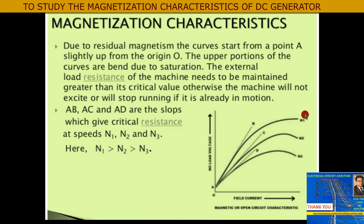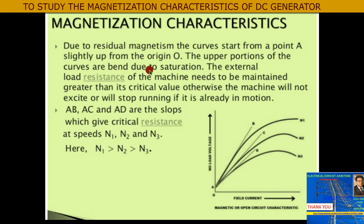There are curves for different speeds — N1 is the highest, N2 is middle, N3 is lowest. The top graph is from speed N1, the middle from N2, and the bottom from N3. Speed is a very important factor. The upper portion of the curves is bent due to saturation. The external field resistance must be maintained greater than the critical resistance, otherwise the machine will not excite.